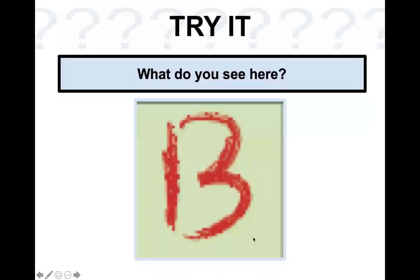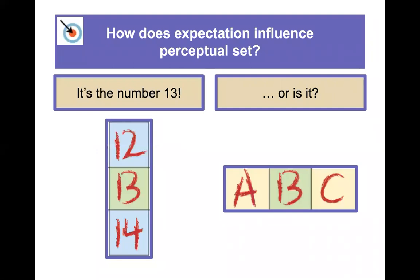Let's look at this next example. What do you see here? Is it the number 13, or is it B? It sort of depends on the context. When you see it listed in the number group, you definitely feel like it's a 13. But when you see it in the letter group, it definitely looks like a B. So our expectations and the context of the information really change what we're seeing — change our perception.